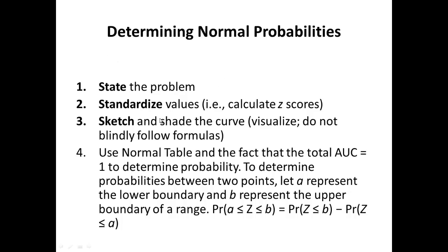Then, if it hasn't already been done, we want to standardize the raw scores into Z-scores. It is very useful and highly recommended to then draw a normal bell curve and sketch out what it is you're trying to accomplish. If you're trying to find where a Z-score falls on the normal curve as far as its percentile rank, we can draw that out. If we're trying to figure out how many scores fall below or above a certain Z-score, or find the percentage of scores between a range, we can draw that out.